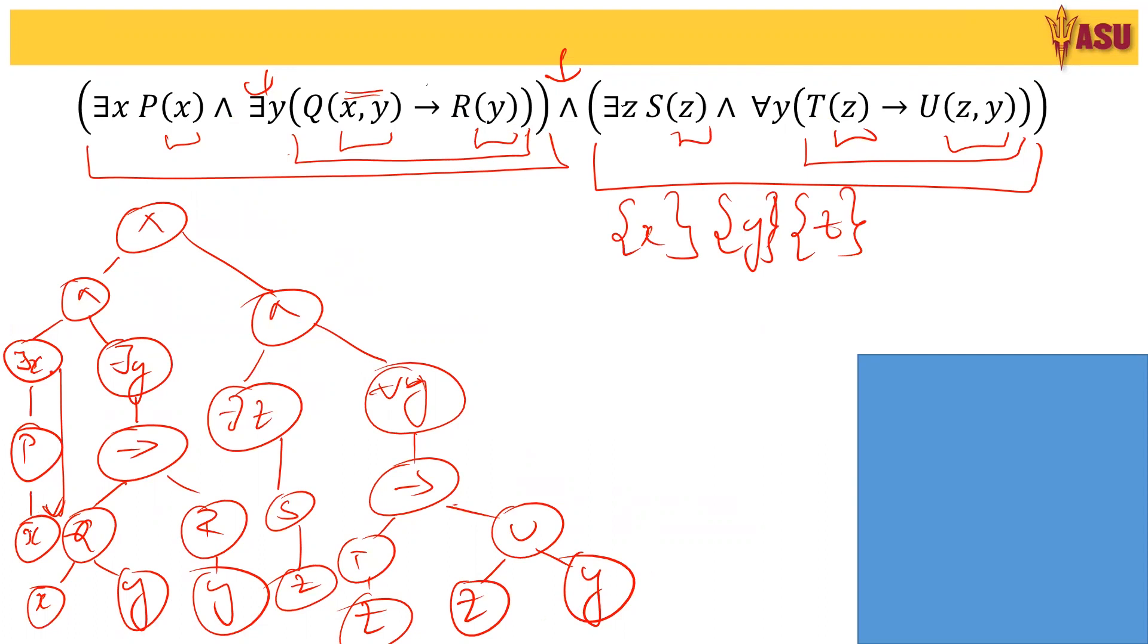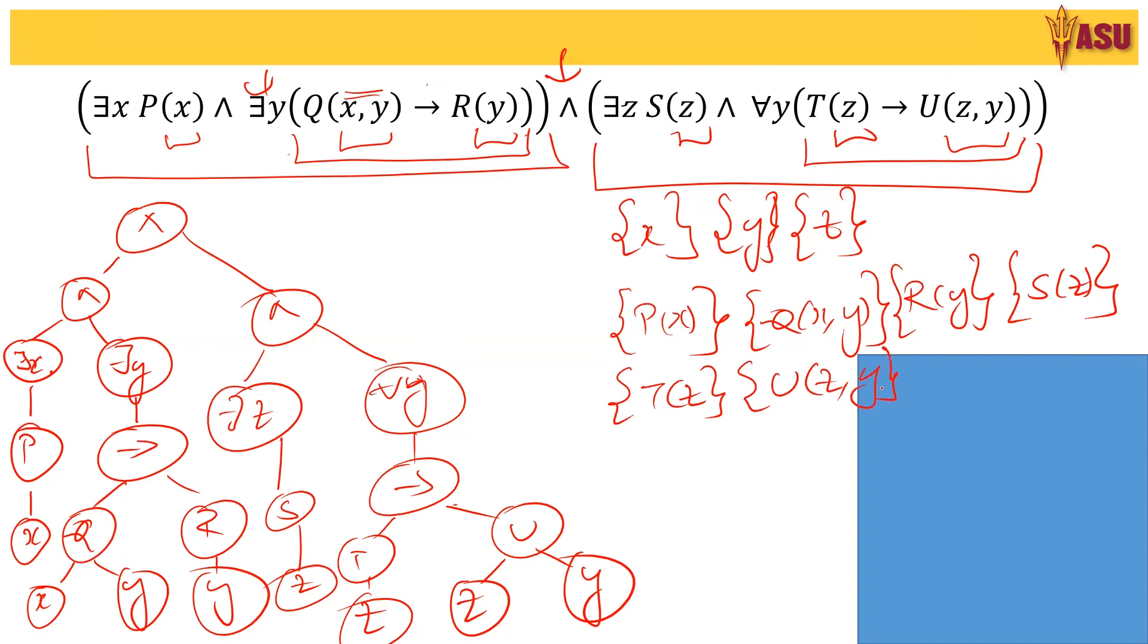So from there, then we build one level higher. So if you see, there is a P of x over here. Here we have a Q of x comma y. R of y, S of z, T of z and U of z comma y. So these are the next levels of formulas. We go one level higher. I would complete this tree over here and this tree over here. So that gives rise to these two formulas.